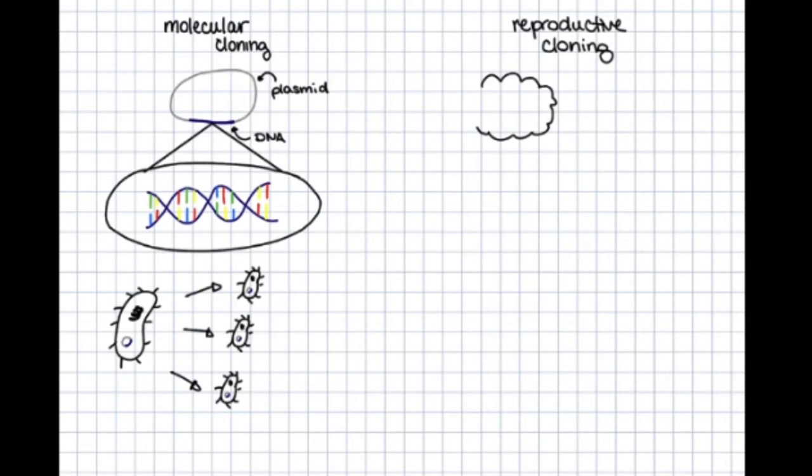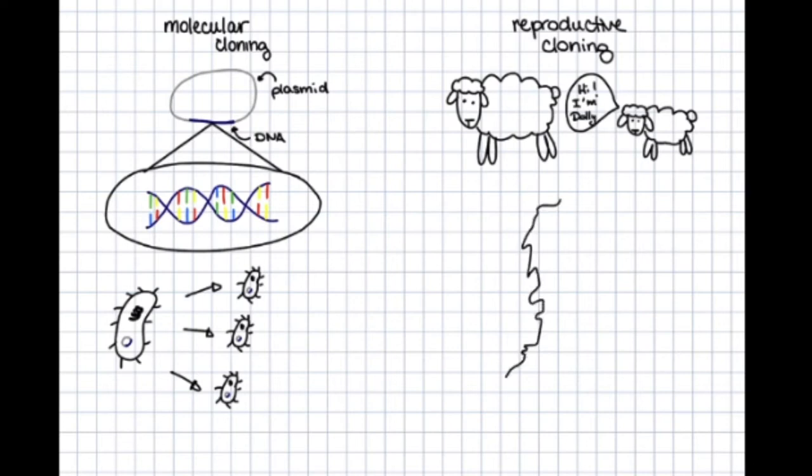However, you might be more familiar with the idea of reproductive cloning. Reproductive cloning is a type of cloning that occurs when an entire organism is cloned. The most famous example of reproductive cloning was that of Dolly in 1996. Dolly was a sheep, born July 5th, due to the work of scientist Ian Wilmot in Edinburgh.